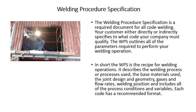A welding procedure specification is a required document for all code welding. Your customer either directly or indirectly specifies to what code your company must qualify. The WPS outlines all of the parameters required to perform your welding operation. In short, the WPS is the recipe for welding operations. It describes the welding process or processes used, the base materials, joint design and geometry, gases and flow rates, welding position, and all process conditions and variables. Each code has a recommended format.